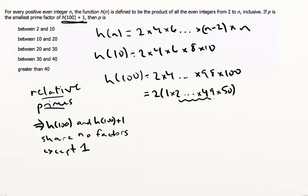So what that's telling us is that, okay, well these are the factors of h(100) are 2 to 50.